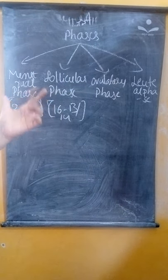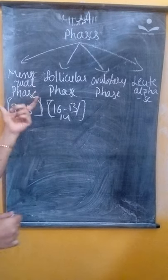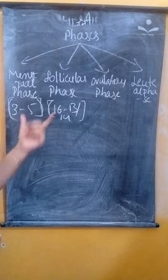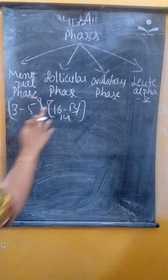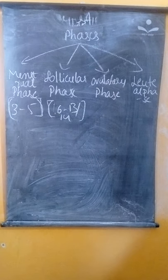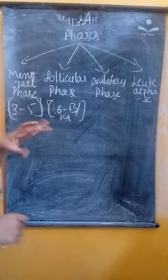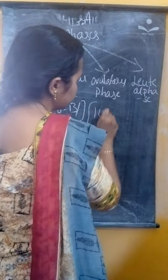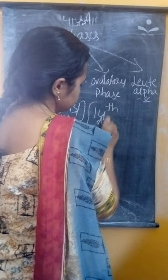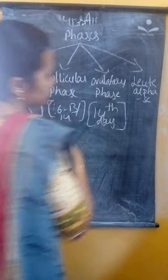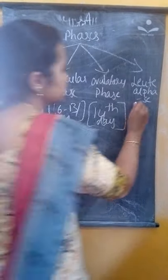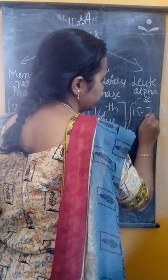And then the four phases: first menstrual phase is three to five, the follicular six to thirteen days. Ovulatory phase is exactly the fourteenth day, and this one is fifteen to twenty-eight days.